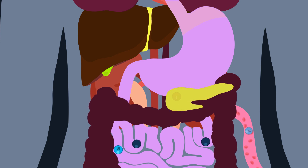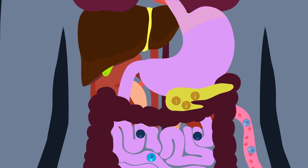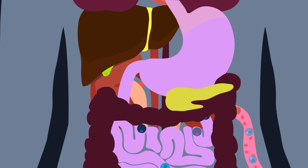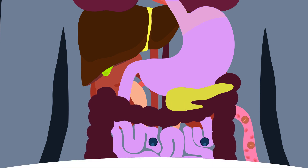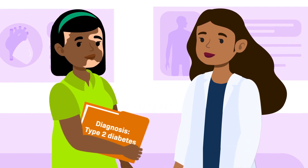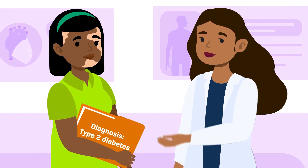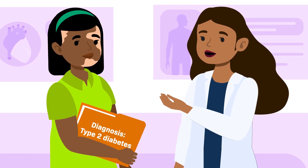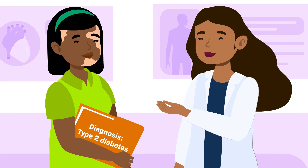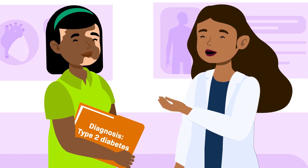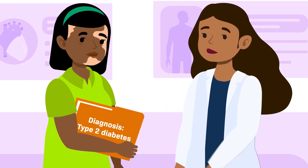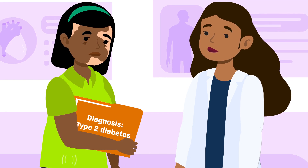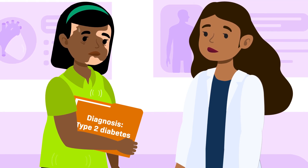Rising blood sugar signals the pancreas to release a hormone called insulin. Insulin helps the cells of the body use the glucose in the bloodstream for energy. When a person has diabetes, however, their body does not produce or respond to insulin properly, which means it does not store or use glucose correctly.